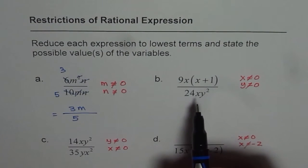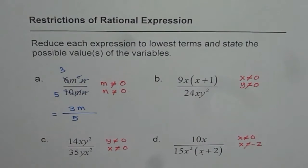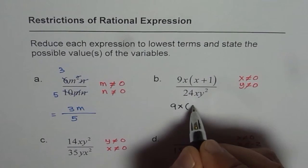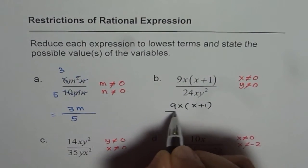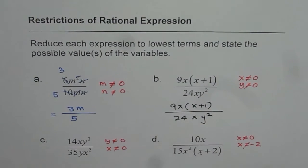Let's do it once again. Here, rewrite this and then simplify. The question is 9X times X plus 1 divided by 24XY square. Now, let's cancel out the common factors. X and X are common factors.